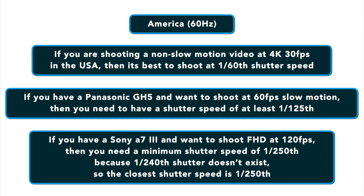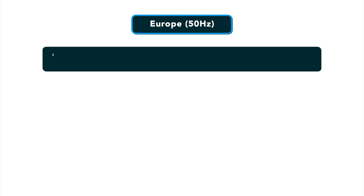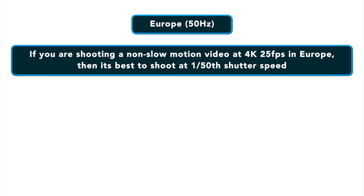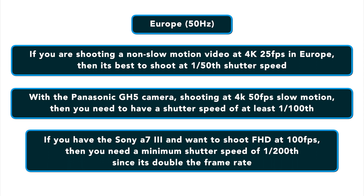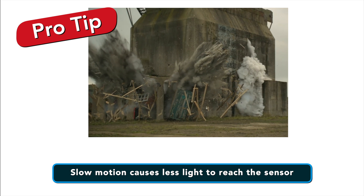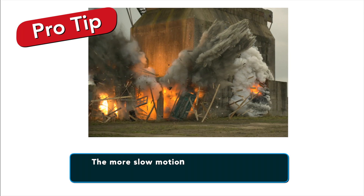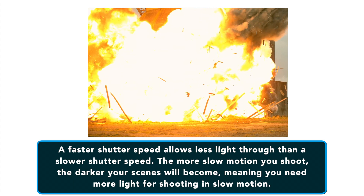Europe uses 50Hz. So if you're shooting non-slow-motion video at 4K 25fps in Europe, it's best to shoot at 1/50th of a second shutter speed. With the Panasonic GH5 shooting 4K 50fps slow motion, you need a shutter speed of at least 1/100th — again, because it's double. With the Sony A7 shooting FHD at 100fps, you need a minimum shutter speed of 1/200th. Remember: double what your frame rate is. You need to remember that slow motion causes less light — the more slow motion you want to shoot, the faster your shutter speed needs to be, meaning you need more light.